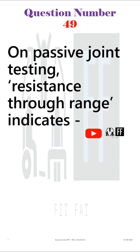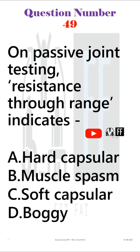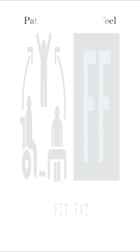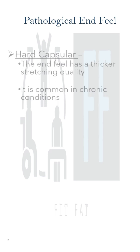Question number 49. On passive joint testing, resistant through range indicates — and the options are given. As you can see, all of these options are pathological end-feels. Here I will discuss the pathological end-feel that is mentioned in the options.